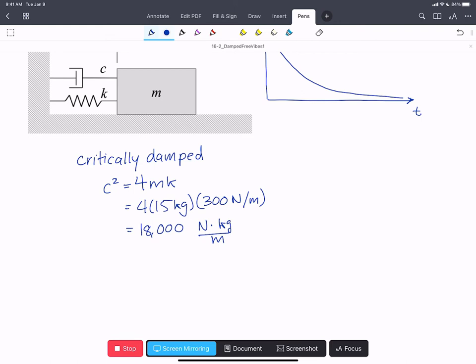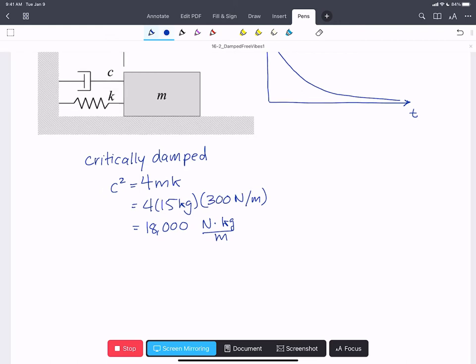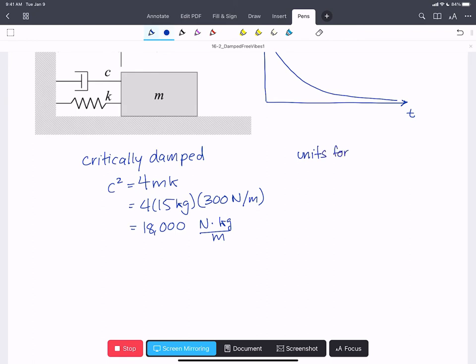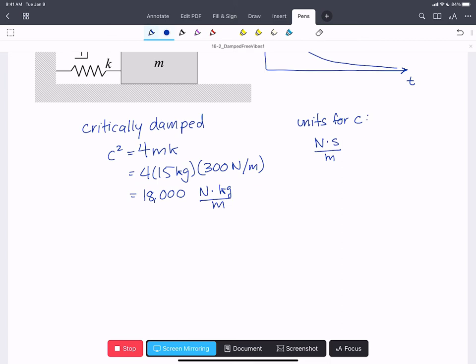Newtons kilograms per meter doesn't look like the units for C squared. The units for C as a reminder are newtons times seconds per meter. But newtons is actually kilograms meters per second squared times kilograms over meters. The meters cancel out and we get kilograms squared per second squared.